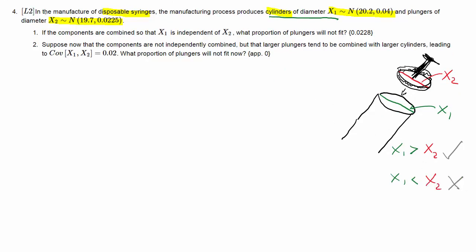So if X1 is smaller than X2, the syringe just isn't going to work. So with that set up, we can now look at question 4.1. Here we assume that we pick cylinders and plungers from two boxes, and they're picked in an independent manner. And what we are asking is what proportion of plungers will not fit.